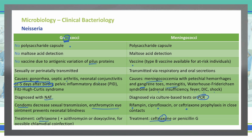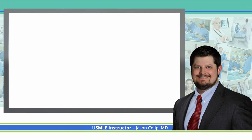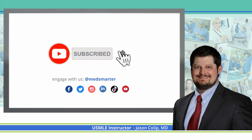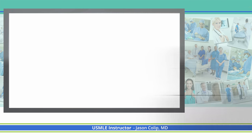We can also use penicillin G for meningococcal meningitis, but our first choice is ceftriaxone due to its ability to cross the blood-brain barrier. If you found this material helpful for your studying, please like and consider subscribing to the channel. Also share this video so that more people can benefit from it.